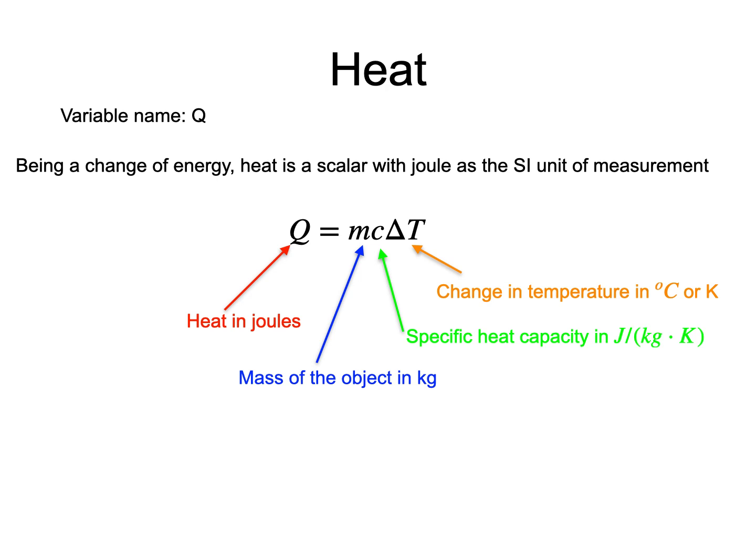For example, the specific heat capacity of water is 4187 joules per kilogram per kelvin. For water in solid form, C is 2,093 joules per kilogram per kelvin.